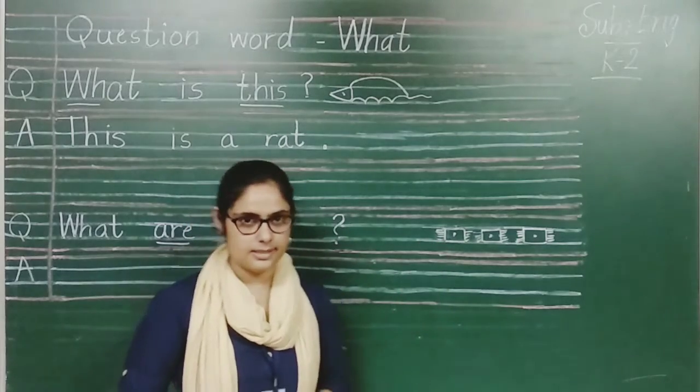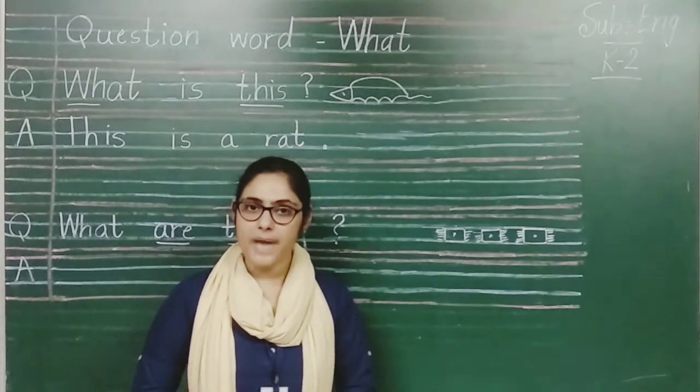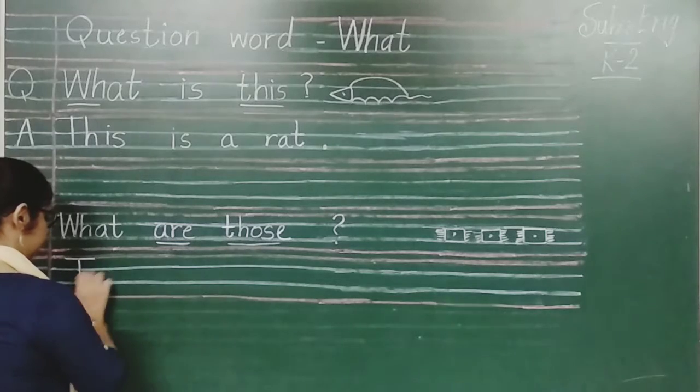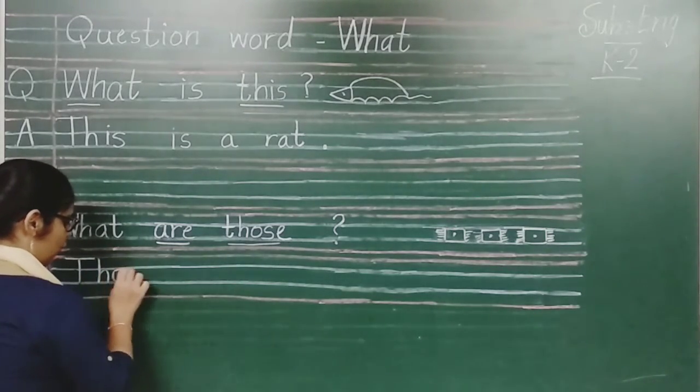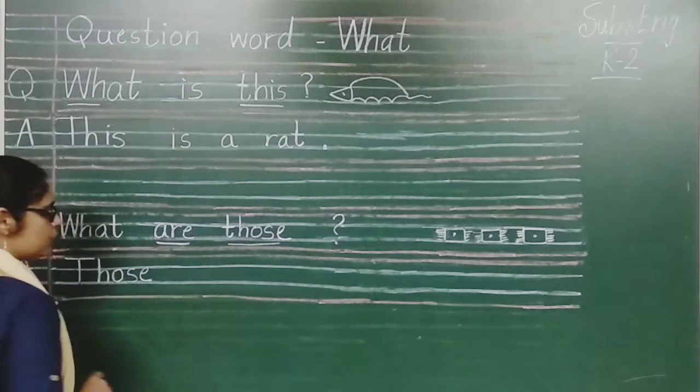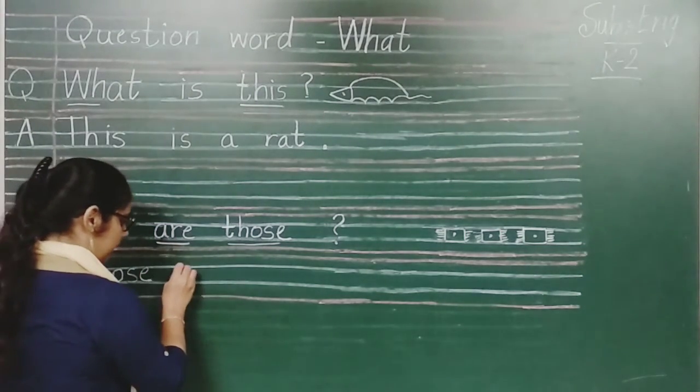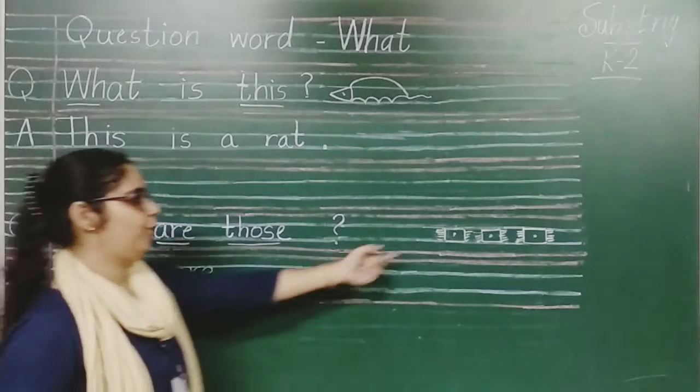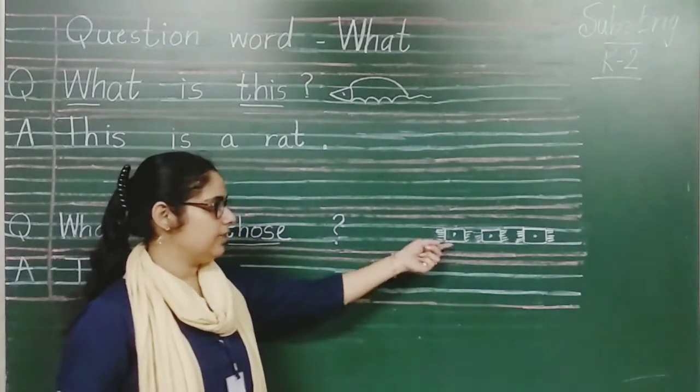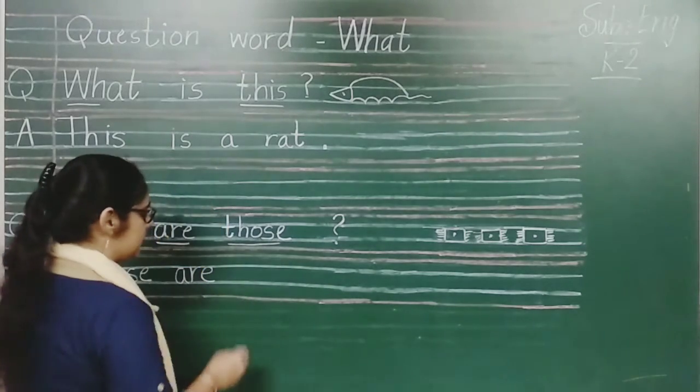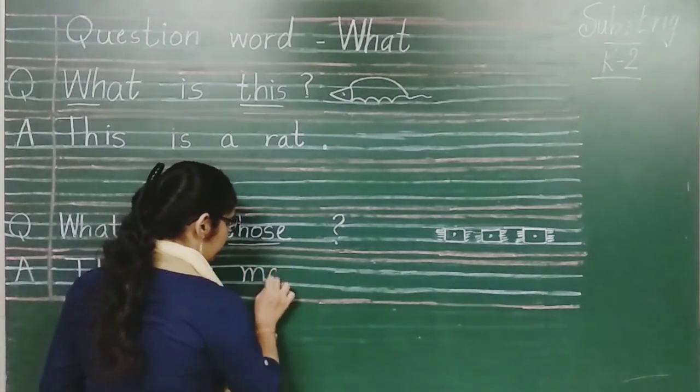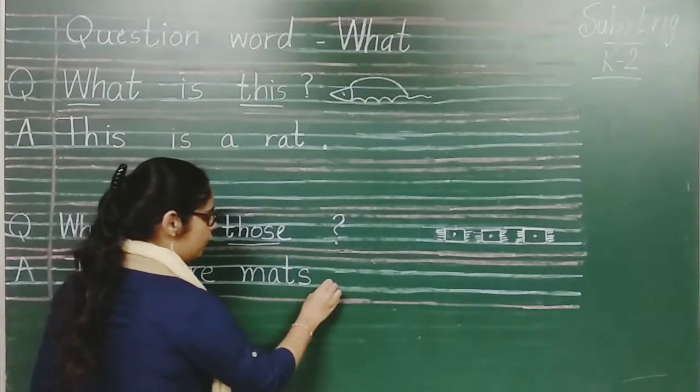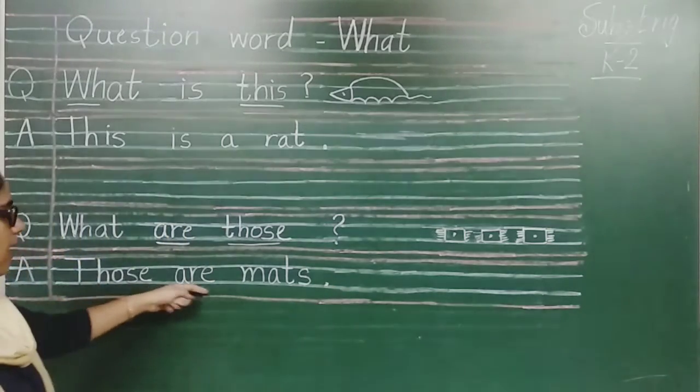What will be the answer? Those are mats. Here we will write. First, those rekhane ko mahaasi hain but first letter should be capital. T h o s e those. A r e. Then we have to write answer, mats. See, they are in plural form, so we have to write mats. M a t s mats. Then full stop. Those are mats.